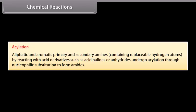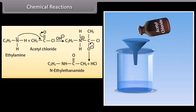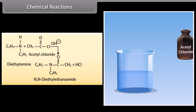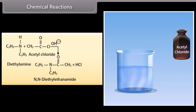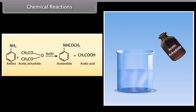Acylation: Aliphatic and aromatic primary and secondary amines react with acid derivatives such as acid halides or anhydrides and undergo acylation through nucleophilic substitution to form amides. Acetyl chloride reacts with ethylamine in the presence of a base to form N-ethylethanamide and hydrochloric acid. Acetyl chloride reacts with diethylamine to form N,N-diethylethanamide. Acetic anhydride reacts with aniline in the presence of sodium hydroxide to form acetanilide and acetic acid.